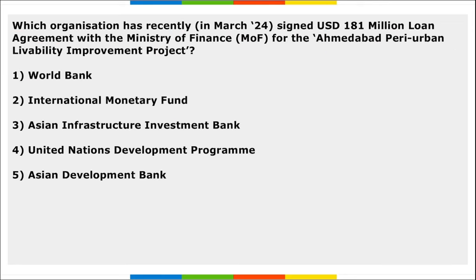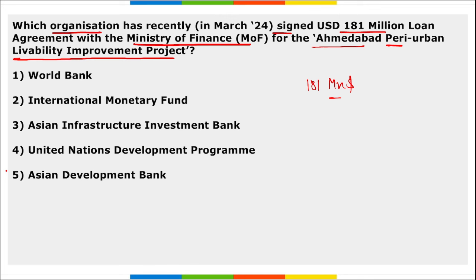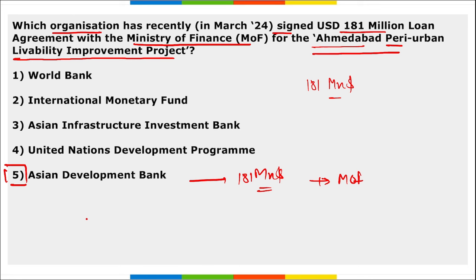Which organization recently signed a $181 million agreement with the Ministry of Finance for the Ahmedabad Peri-Urban Livability Improvement Project? It is the Asian Development Bank. This amount will be used to build quality infrastructure and provide services for urban livability and mobility in the peri-urban areas of Ahmedabad city in Gujarat.